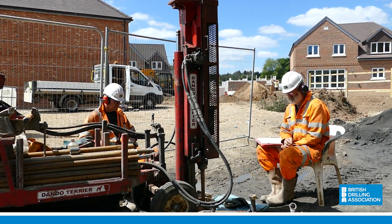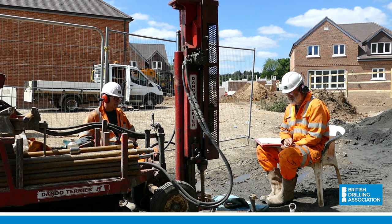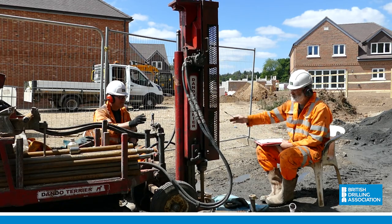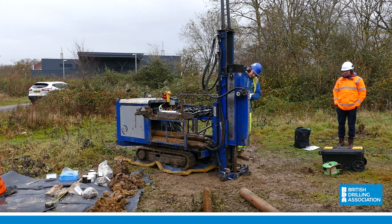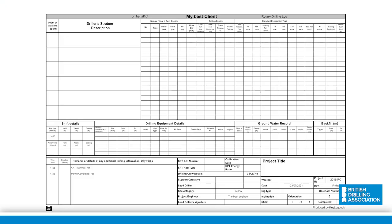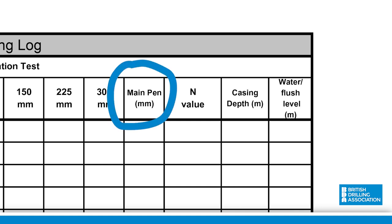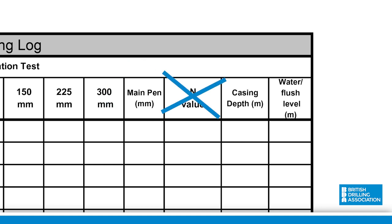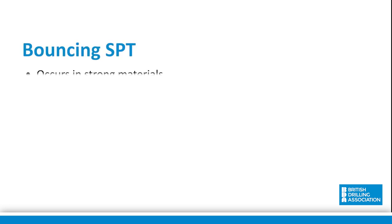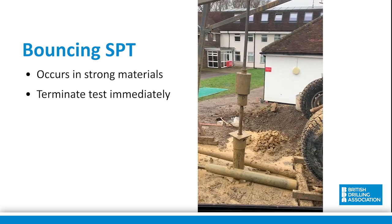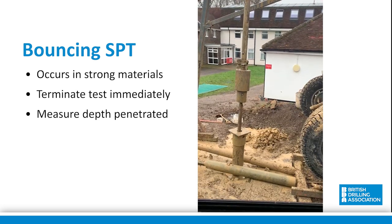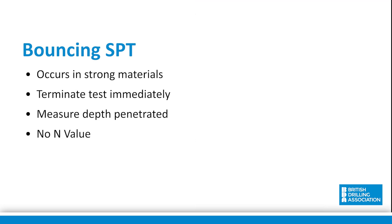Once the seating drive is complete, the test is then driven for a further four 75mm increments, and the number of blows for each increment is recorded. If the test is driven the full 300mm, then the blows for each increment are added up to obtain the N value. Refusal of the main drive occurs if a total of 50 blows fails to achieve the full 300mm penetration. If refusal is met, the depth penetrated is recorded; however, no N value is recorded. In some strong materials, the hammer may bounce on impact. Should bouncing occur, as shown here, the test should be terminated immediately. The depth penetrated should be measured, and the refusal noted as bouncing. Again, no N value is recorded in this scenario.